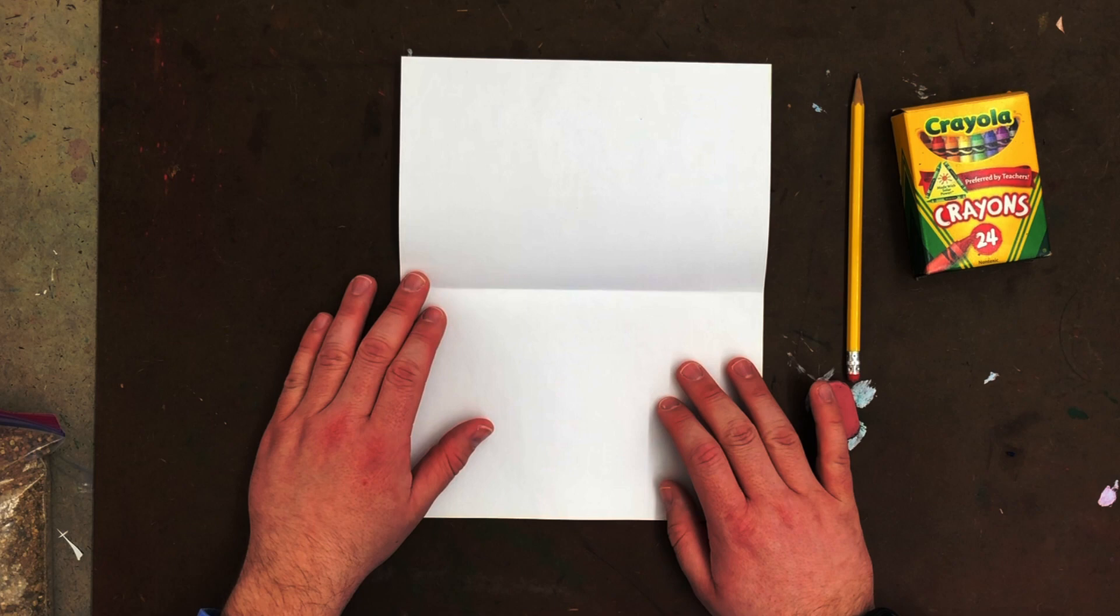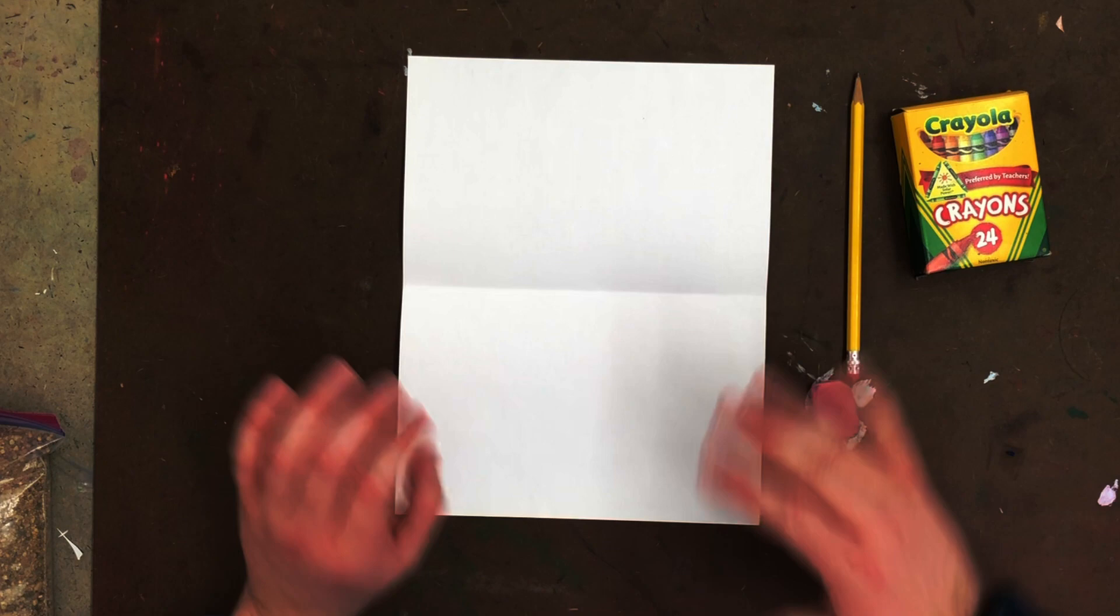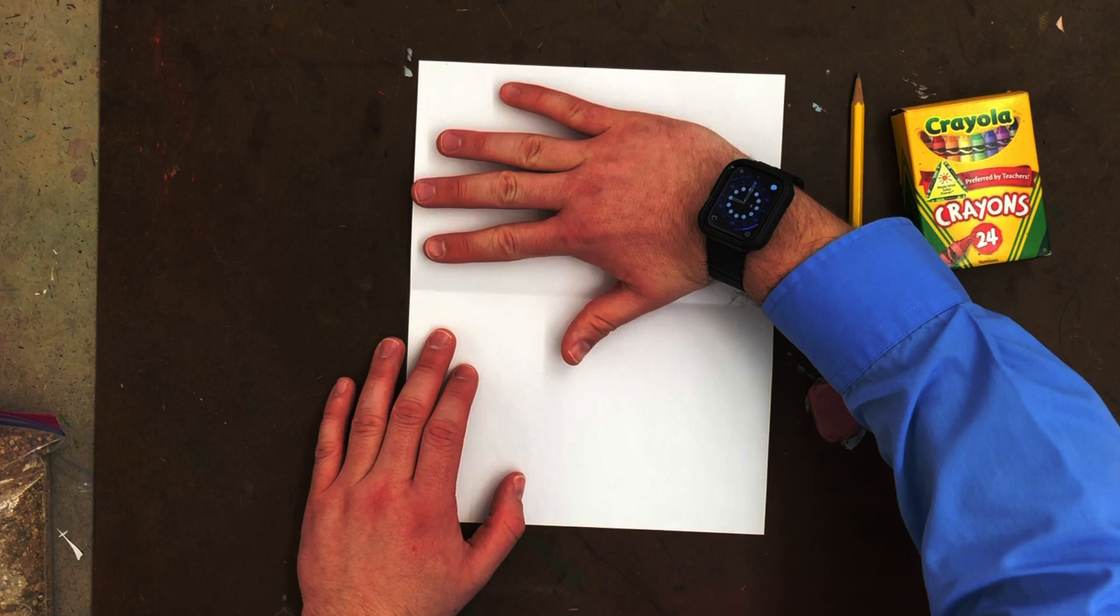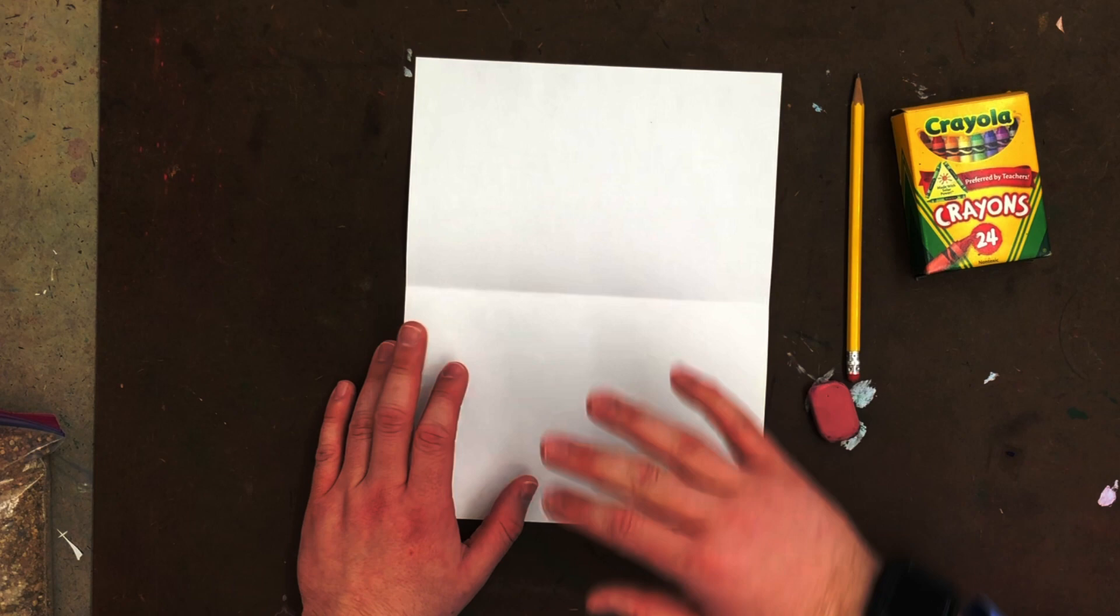Next we're going to need to trace our hand. Our hand is going to go up here on the top half, but if I put my hand down, for me, because I'm an adult, my hand is a bit big. You as a student, your hand is a little bit smaller, so that's going to fit.